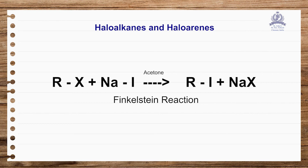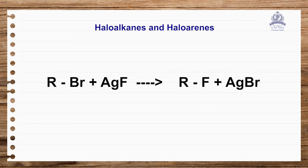For alkyl fluorides, metallic fluorides such as silver fluoride, cobalt fluoride, or mercuric fluoride are used in a halogen exchange reaction to give alkyl fluorides — this is the Swartz reaction. So we have covered three named reactions: Sandmeyer, Finkelstein, and Swartz, all for the preparation of alkyl halides. This is the end of part one.